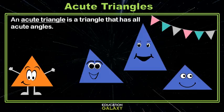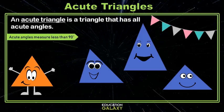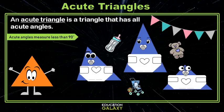An acute triangle is a triangle that has all acute angles. Don't forget, acute angles are less than 90 degrees. They are acute triangles. Get it?